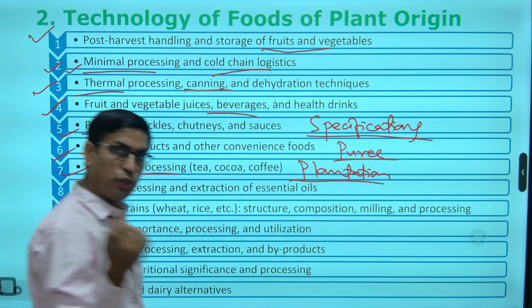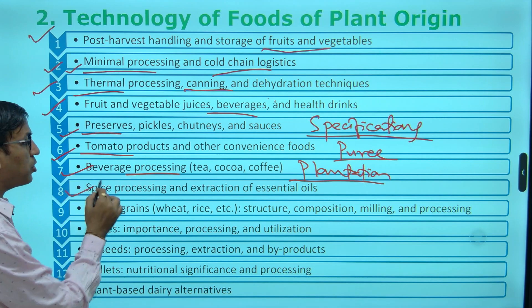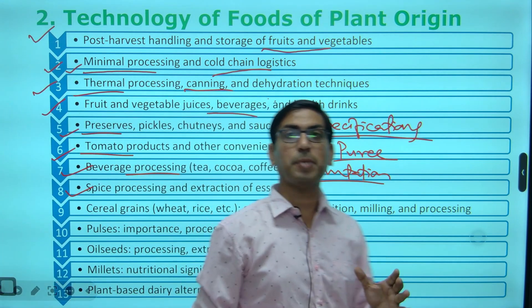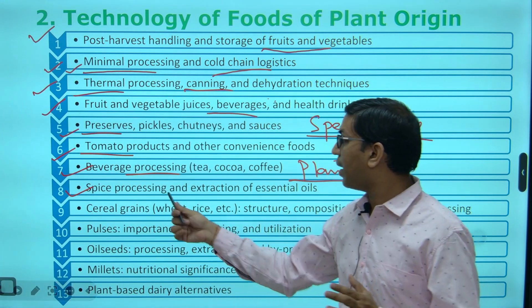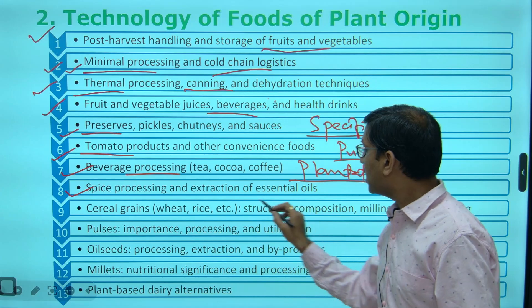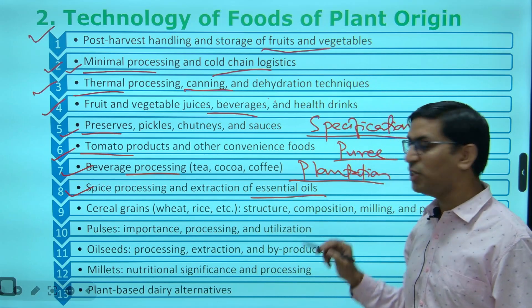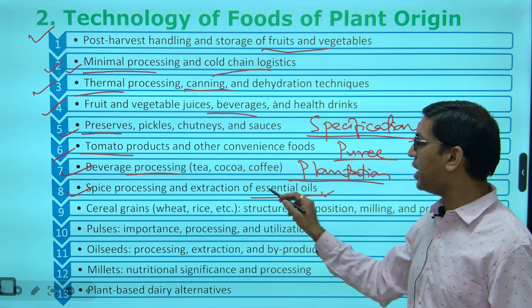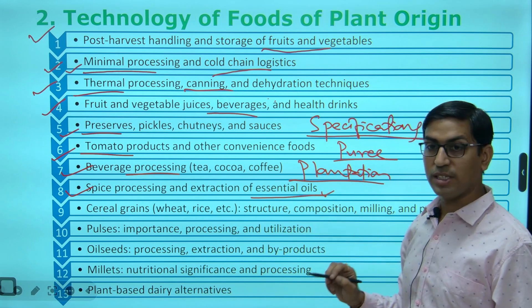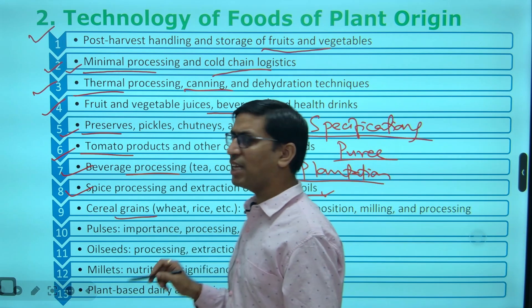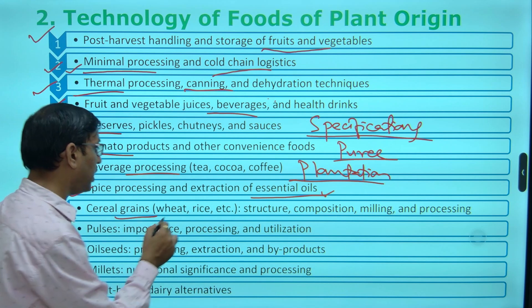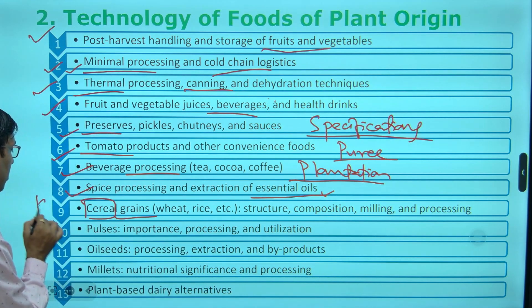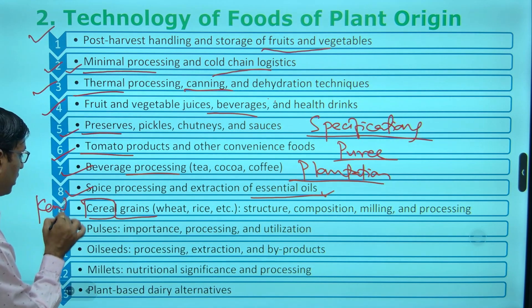Tea, coffee, jute — spice processing — what are the major spices, what are the minor spices, and what are the specific steps by which we can identify or determine essential oils. Even cereal grains — specifically cereal grains — the main book for this is Kent.